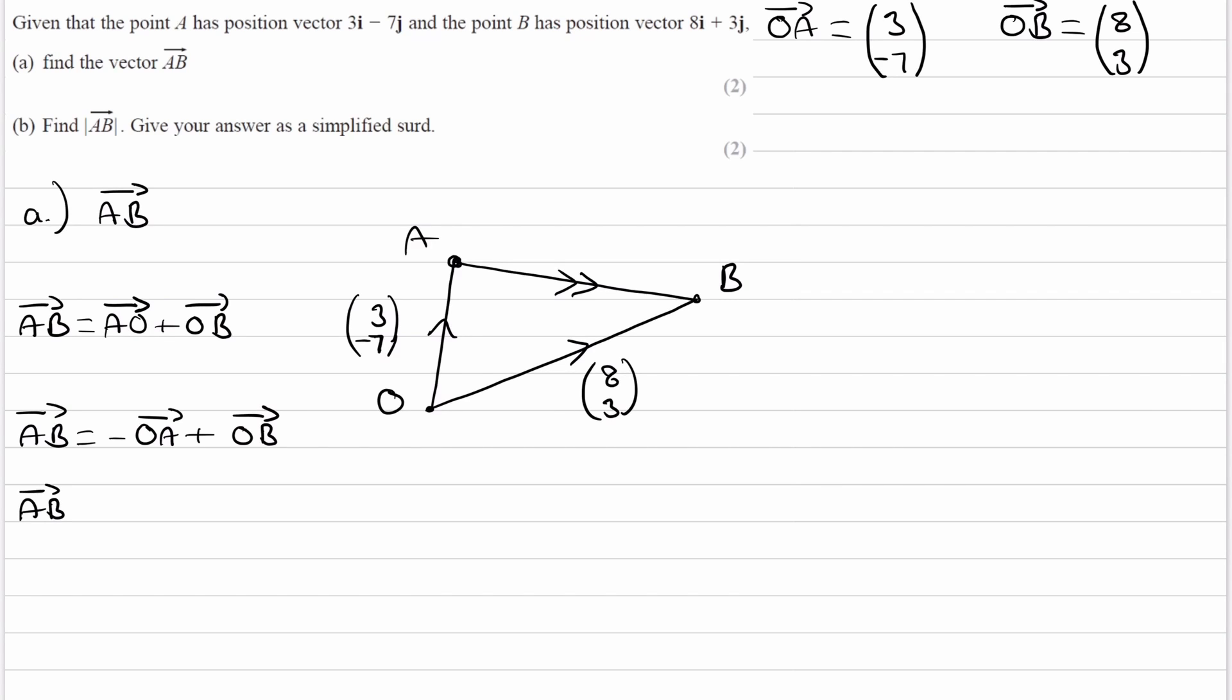So that is then minus OA is -3, 7, and then plus OB, which is 8, 3. So this will end up being, if you add these two components, in the i direction, we have 5, and in the j direction, we have 10.